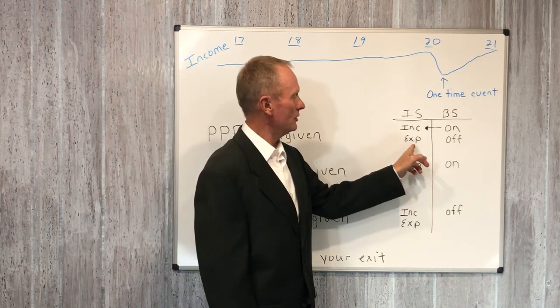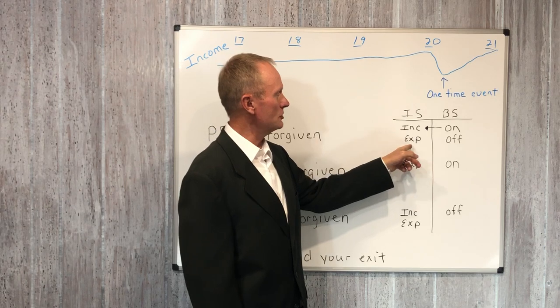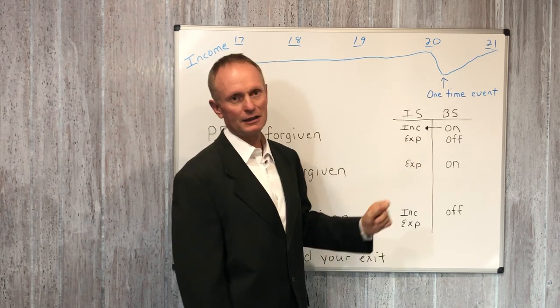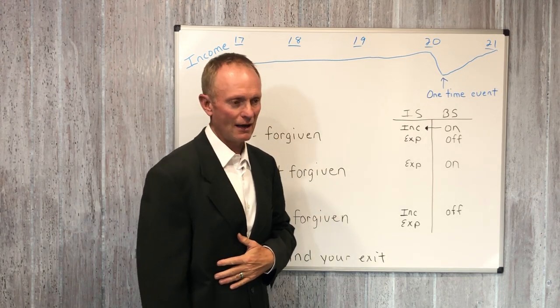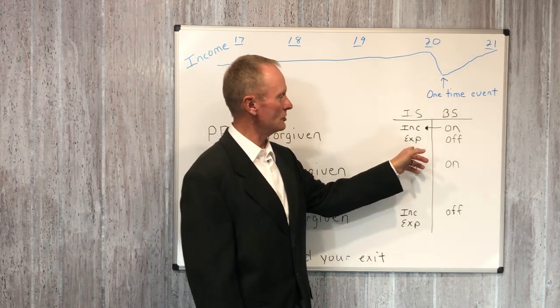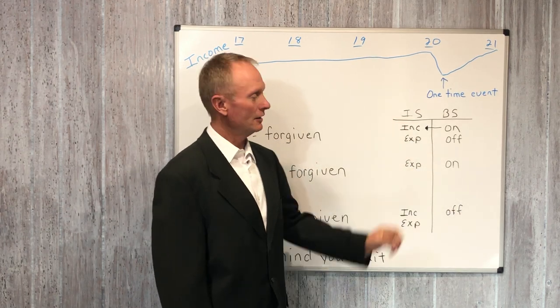On the PPP loan, initially when you get your money, you're going to have expenses. They're going to be continuing, and it's not going to show as income on your income statement until it's forgiven. So you may have the expenses loaded into 2019 and then the income coming in in 2020.